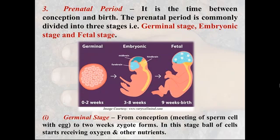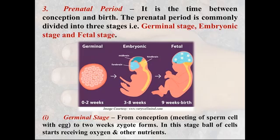The germinal stage spans from conception to two weeks, during which a zygote forms. Conception here means the meeting of a sperm cell with an egg. From that point to two weeks, the zygote forms — this is called the germinal stage. In this stage, the cells combine together to make a bowl of cells, which starts receiving oxygen as a nutrient from the mother.